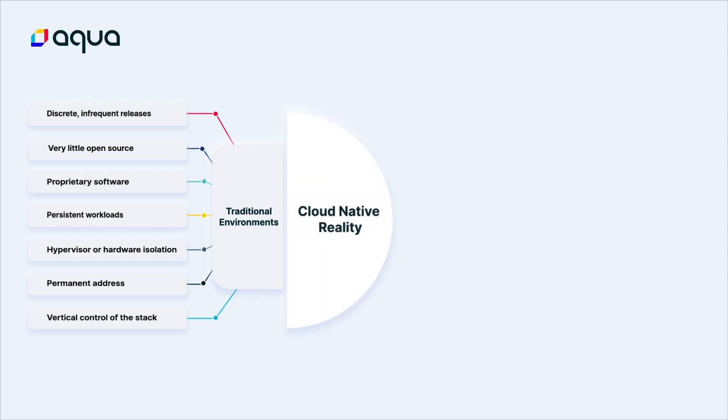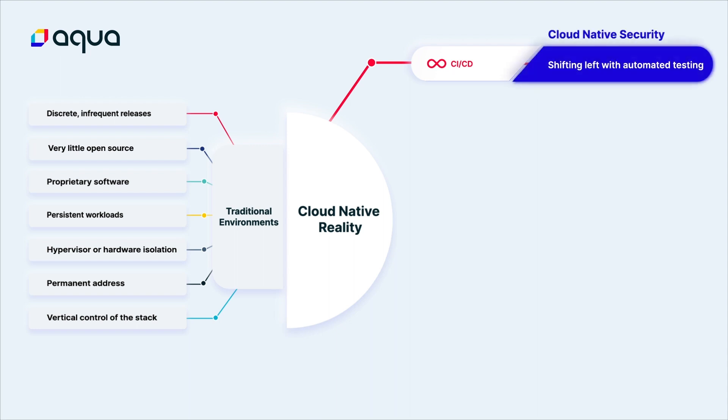In a cloud-native environment, fixes are not made in production. Instead, frequent automated releases in the continuous integration and continuous delivery pipeline mean that security must shift left earlier in the software development process.